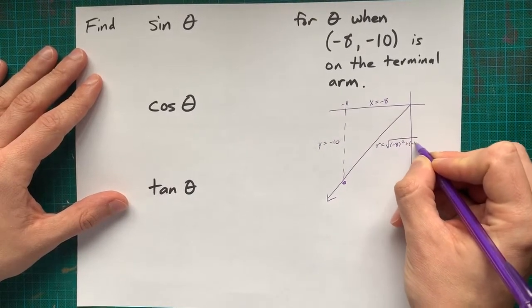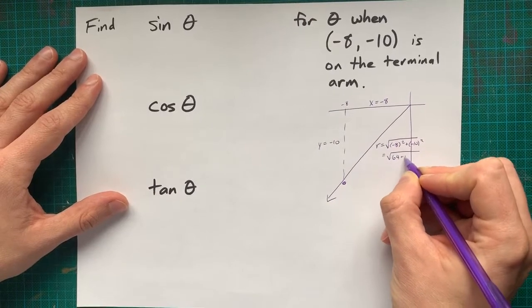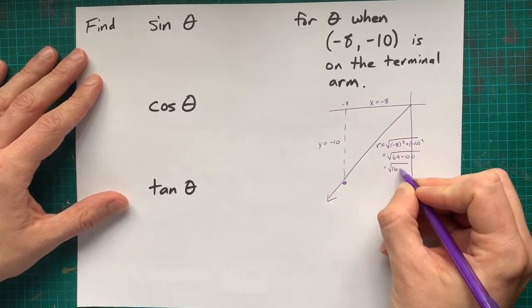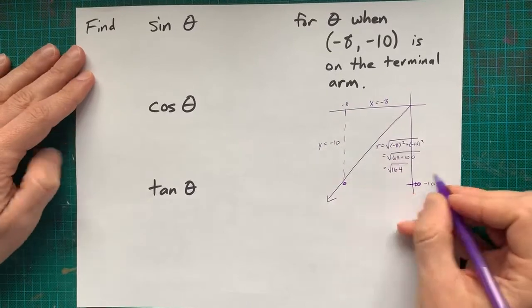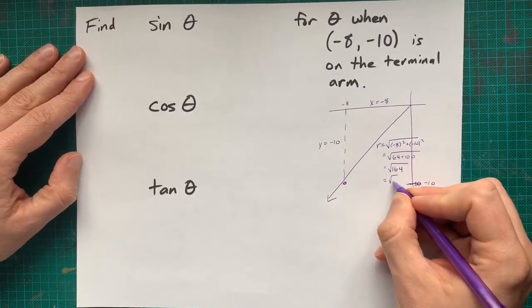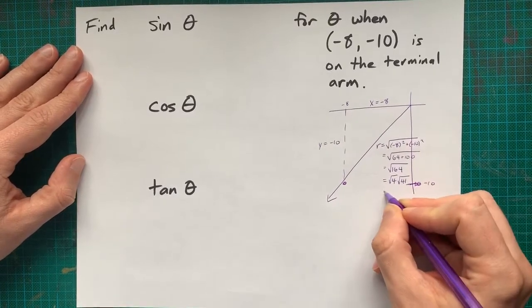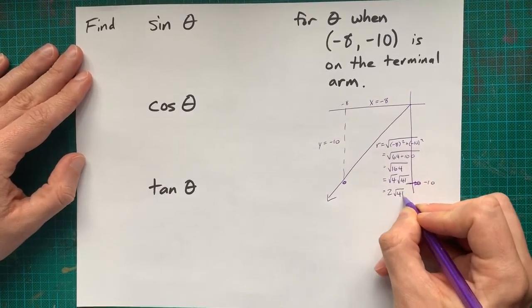Negative 8 squared plus negative 10 squared, 64 plus 100. That's the square root of 164. Most teachers are going to ask you to simplify that radical. It's the square root of 4 times the square root of 41, which is 2 root 41.